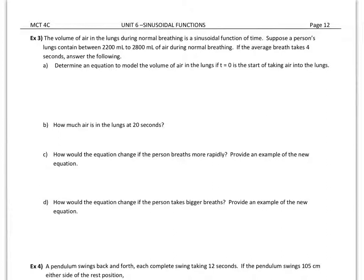We're talking about the volume of air in lungs during normal breathing, so it is a cyclical pattern. I've given you the minimum amount of volume of air and then the maximum, so from there you should be able to calculate the midpoint, which would be your axis of the curve, and you can get your amplitude from that. It's talking about taking four seconds for one breath, so that's the time for one cycle.